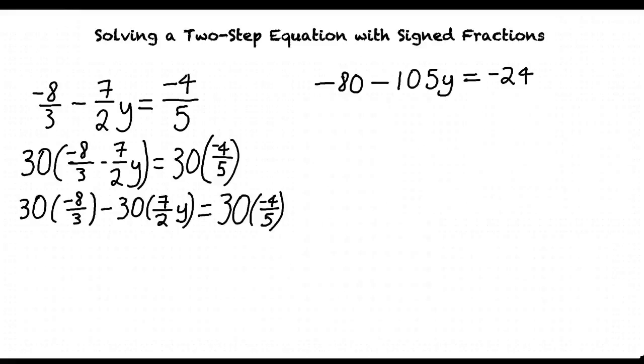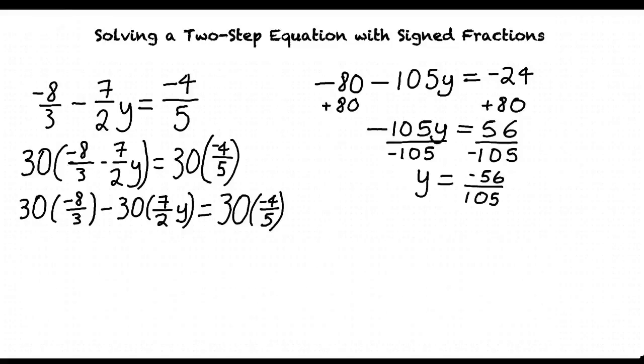Then, solve for y by adding 80 to both sides. Then divide by negative 105 to isolate y. Lastly, simplify negative 56 over 105 to negative 8 over 15 and you have your final answer.